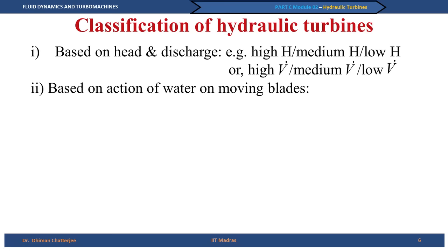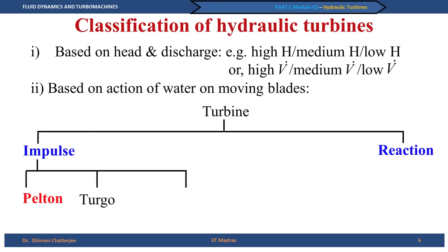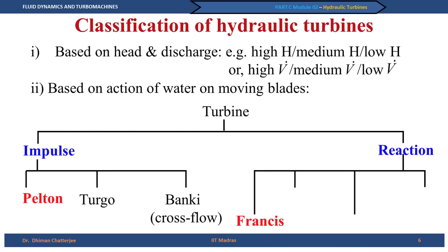Based on the action of water on the moving blades, turbines are classified into two categories: impulse type and reaction type. An impulse hydraulic turbine is one in which there is no change of static pressure in the runner blades. A reaction turbine is one in which there is a change in pressure. Impulse turbine examples include Pelton, Turgo, and Banki or cross-flow turbines; reaction turbines include Francis, Deriaz, Propeller, and Kaplan.